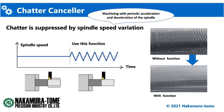Chatter refers to the vibration that occurs between the tool and the workpiece. This vibration often results in a machined surface that looks like the image on the right, resulting in poor surface roughness and reduced tool life. By controlling the spindle rotation, chatter-cancellor is used to avoid this problem.